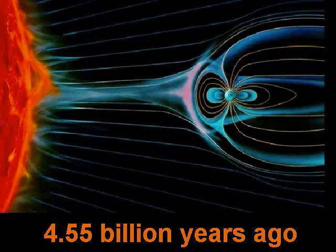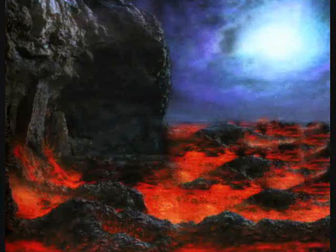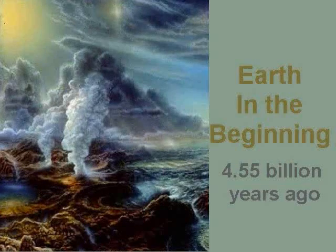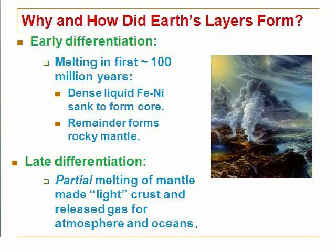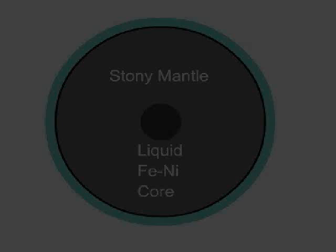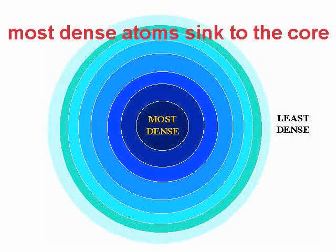Now let's go back to 4.55 billion years ago. The earth is a pile of hot stuff — everywhere there is molten atoms and molecules swirling and starting to coalesce into a round ball of solid matter. There is nothing here that you would recognize as the earth as you know it. In these early stages, geologists have divided this time into two differentiations: early differentiation and late differentiation. The first 100 million years is called the early differentiation. During this time, two things happened: first, our molten atoms and molecules began to separate, which caused the higher density atoms like iron and nickel to sink toward the center to form the core.